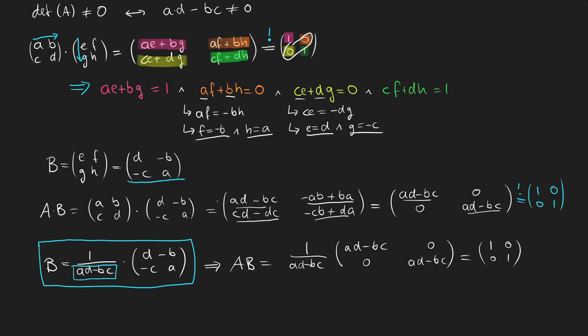Hence, as a conclusion, we have shown that if the determinant of A is not equal to 0, there exists such a B that A times B is the identity matrix.